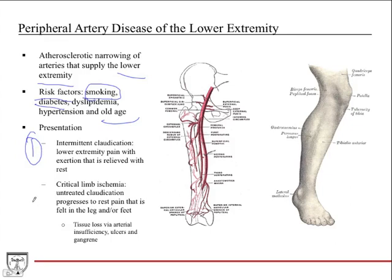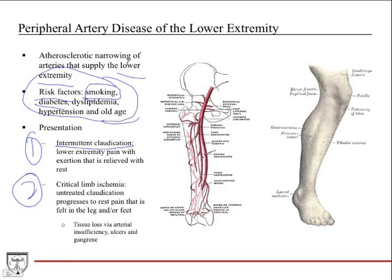There are two main presentations for boards. First: intermittent claudication — lower extremity pain when walking that is relieved when resting. It can be confused with spinal stenosis, but spinal stenosis on a board exam is almost always bilateral, and those patients will have back pain, whereas PAD patients won't. PAD patients will also have all these risk factors. It's all about context on the boards, and clinically you'll ask about smoking, diabetes control, blood pressure — all these factors play in.